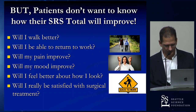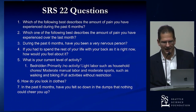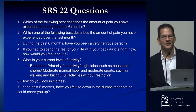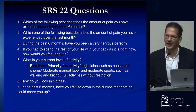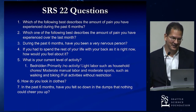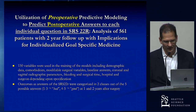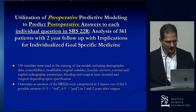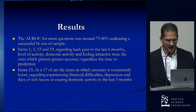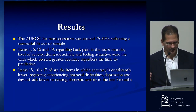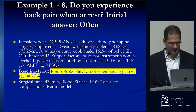We went back to Miguel and asked: could you actually predict the answers to the individual SRS-22 questions? He took about a week and came back saying he could do that even better than predicting overall MCID. With about 75% to 80% accuracy, he was able to predict the answers to each SRS-22 question at one and two years post-op using 150 different variables, doing best at predicting pain and activity and least well at predicting depression and domestic activity.